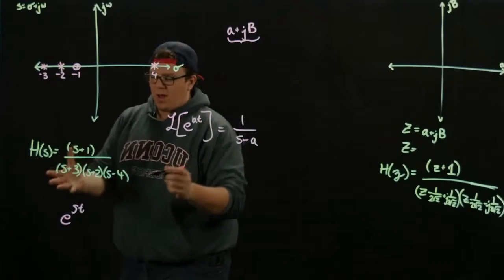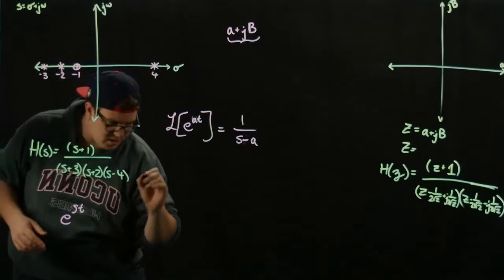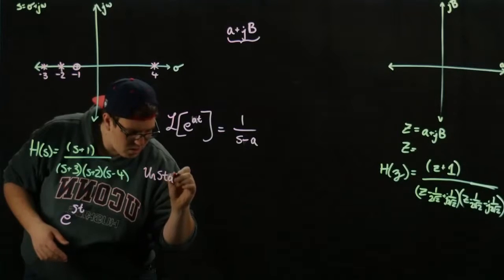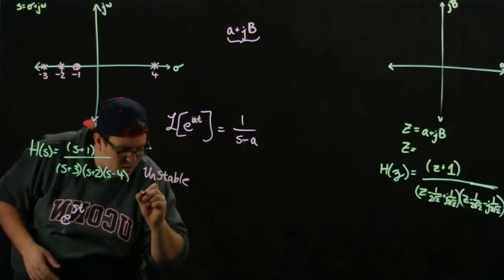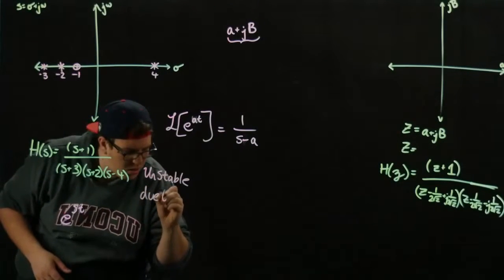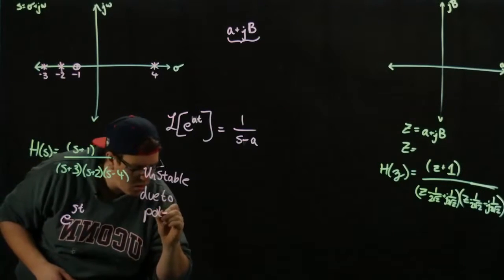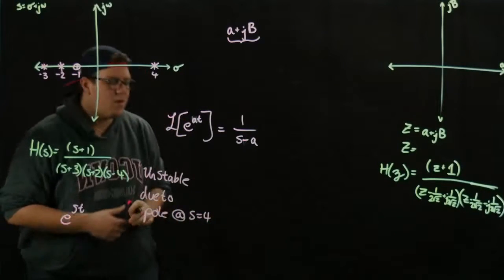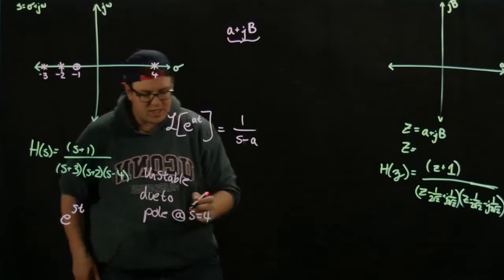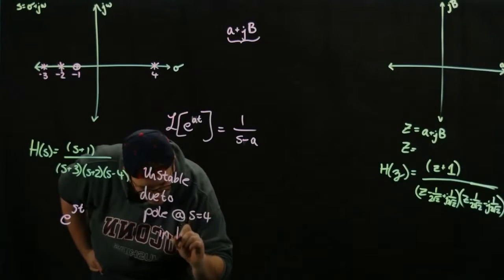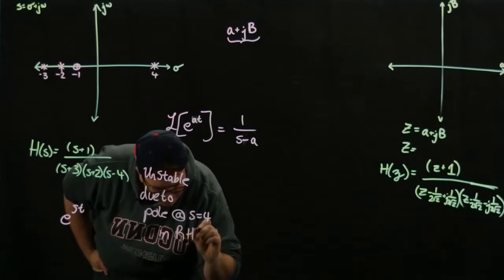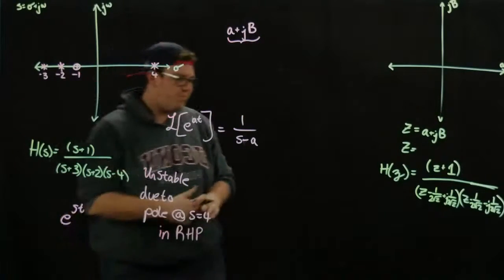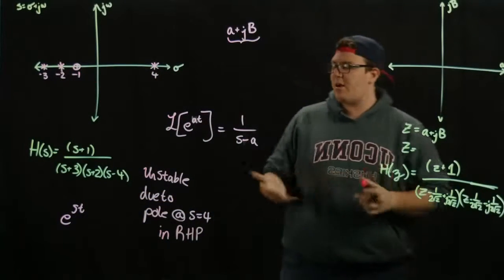Plotting these guys here, this transfer function is unstable due to a pole at S equals 4, or you can just say due to a pole in the right half plane, which we abbreviate RHP. So that's how it works in the S plane. As long as you can plot your poles in zeros, you can tell this.